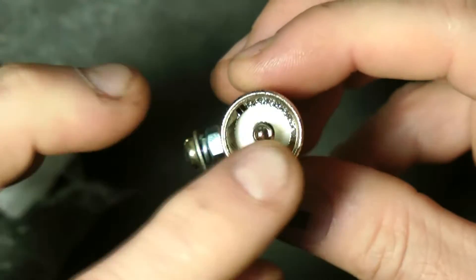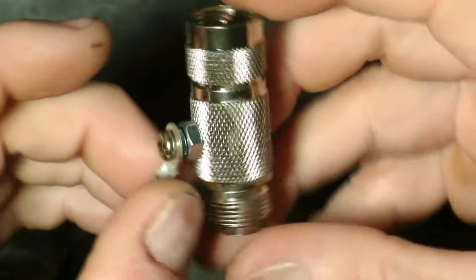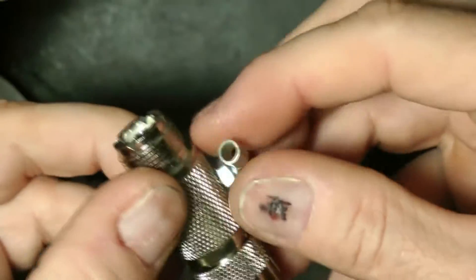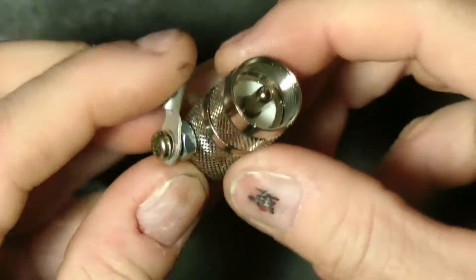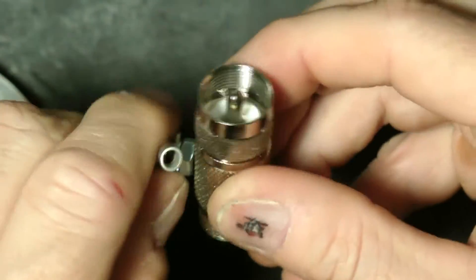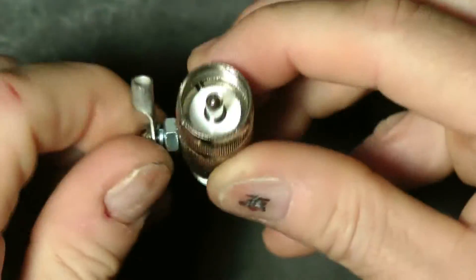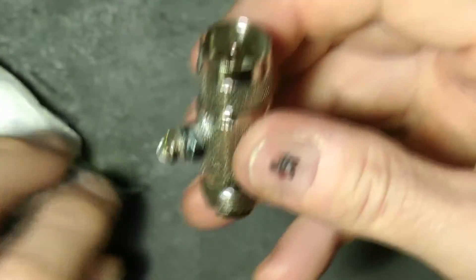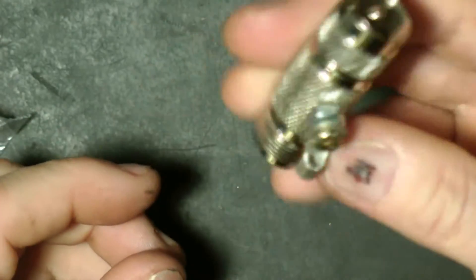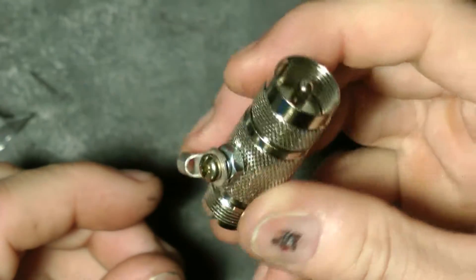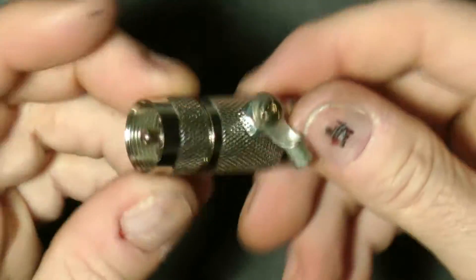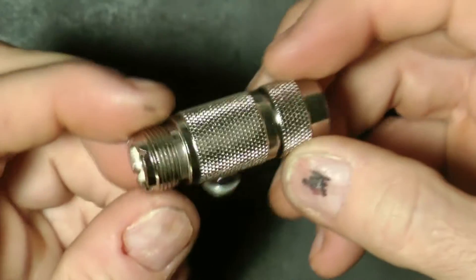This will allow if your antenna does get hit for the electricity to go to just the ground, and it won't harm your radio equipment. Hopefully you have electrical surge protectors, but this protects from electromagnetic electricity that could hit your antenna and burn it out.